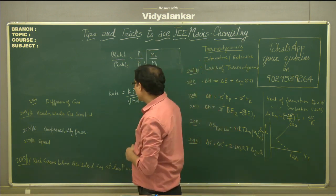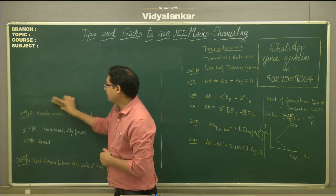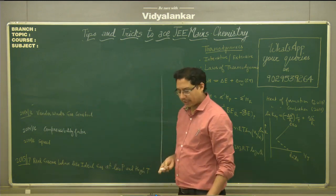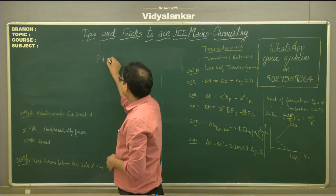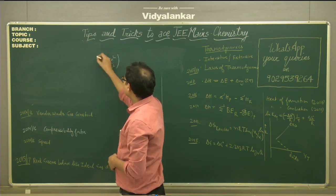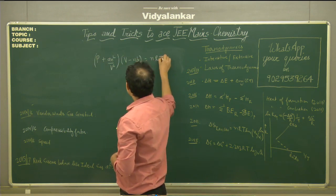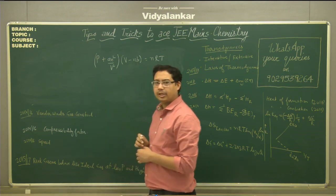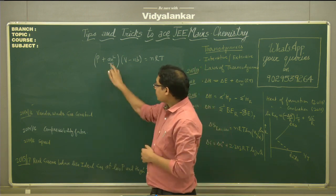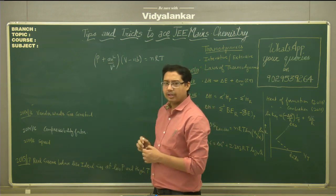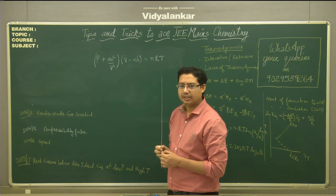Questions can also be based on the Van der Waals gas equation, commonly known as the equation of real gas. The equation is: (P + an²/V²)(V - nb) = nRT, where A and B are known as Van der Waals gas constants. A indicates the force of attraction between gas molecules, whereas B indicates the size of the gas molecule.